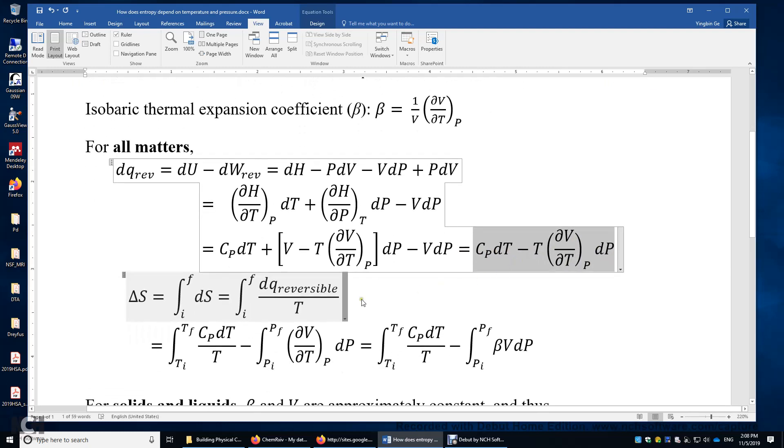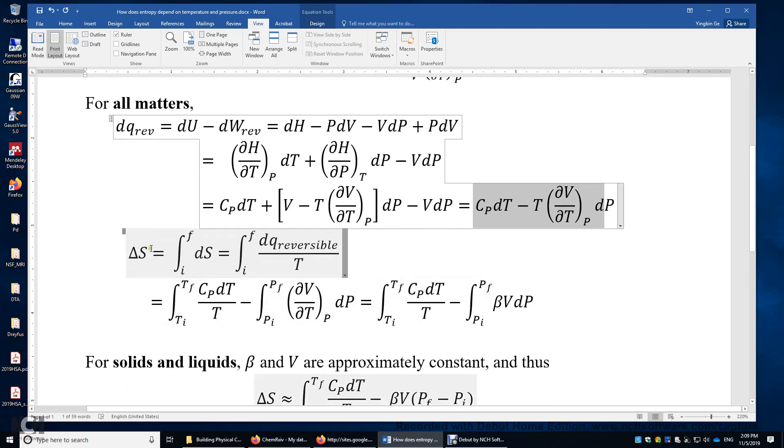And then we can compute the entropy change, which is the integral of DS. DS equals DQ reversible over T, which is plugging in the expression for DQ reversible. Once we plug in this expression, we have the equation for the entropy change, which is the integral of CpDT over T minus the integral of delta V over delta T times DP.